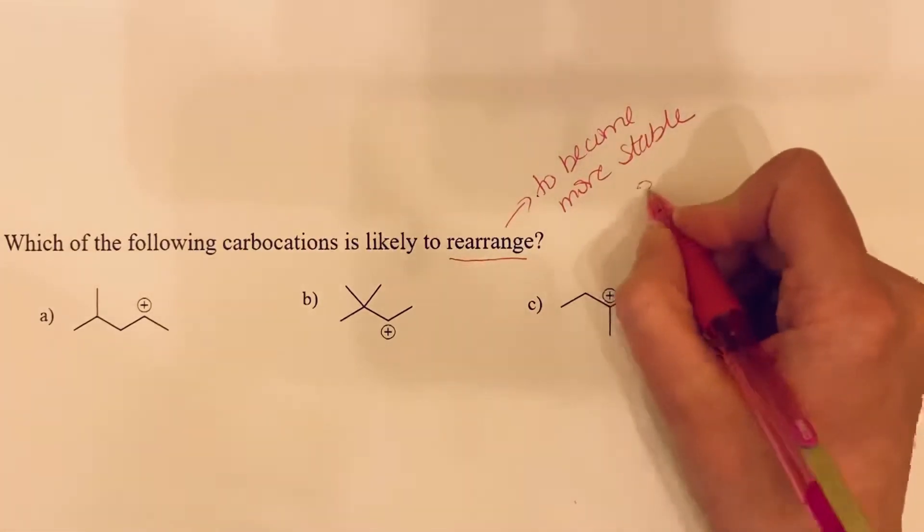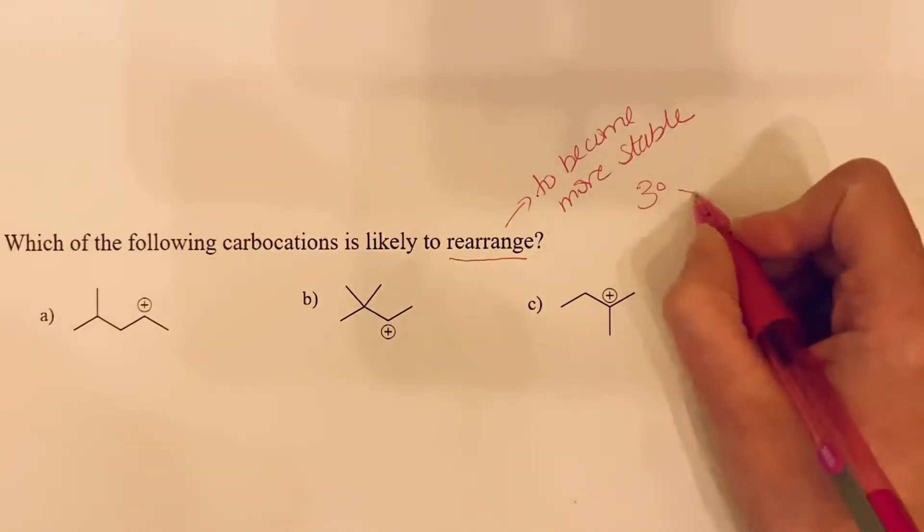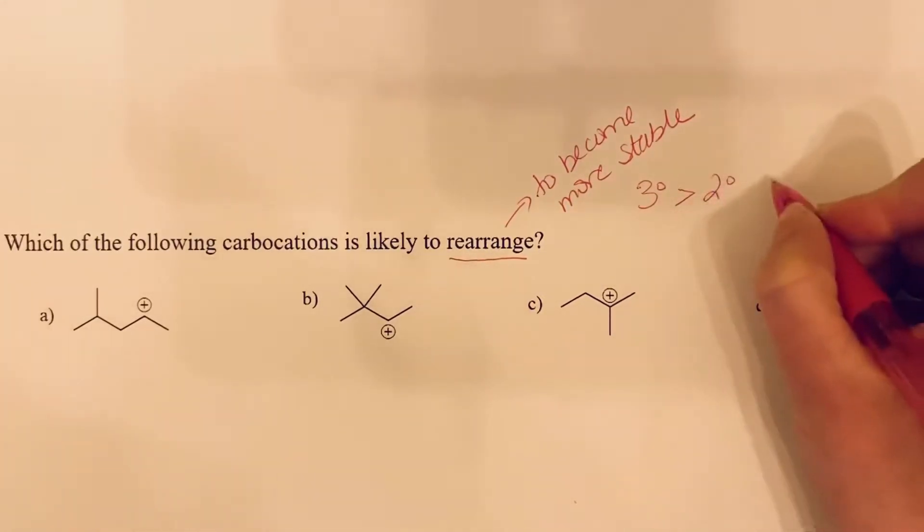The trend that we have learned is that a tertiary carbocation is more stable than a secondary carbocation, which is more stable than a primary carbocation.